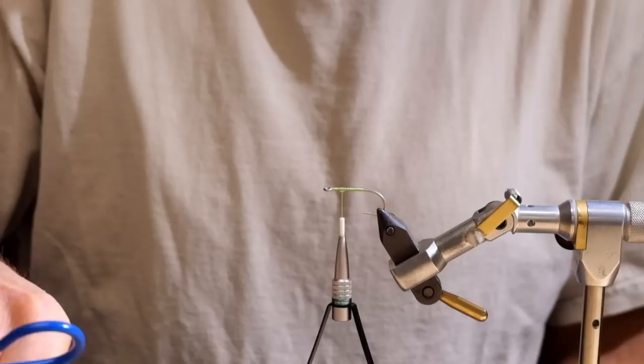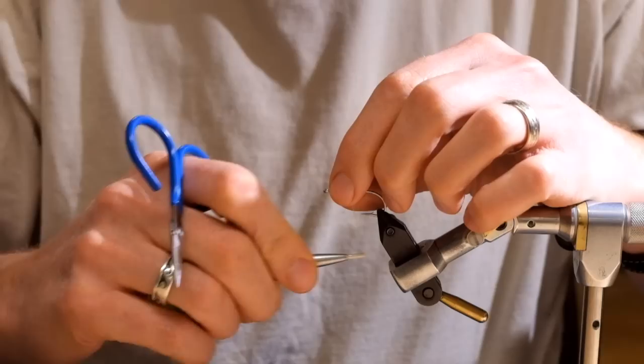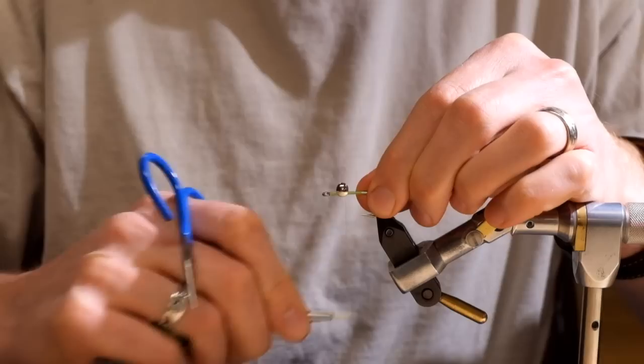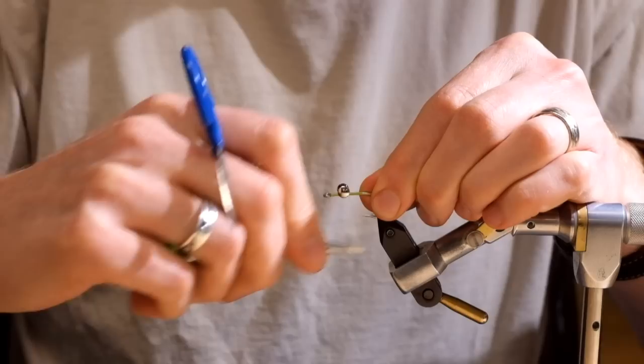We're gonna use the Alaska Fly Tier's best friend for putting on eyes. I'll drop a zap-a-gap right there. You're gonna figure eight some wraps, nice firm wraps to secure those eyes and each wrap soaks up a little bit of that zap-a-gap.